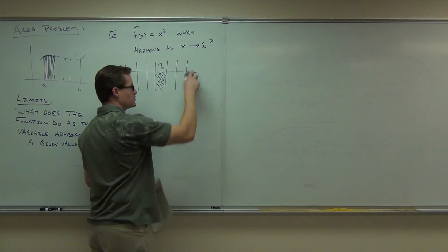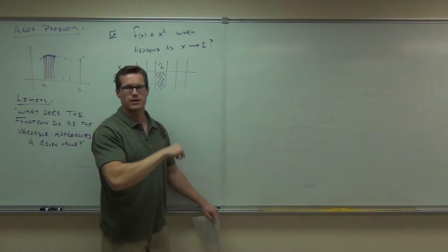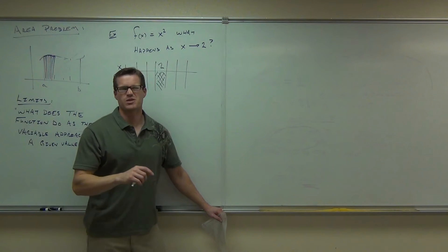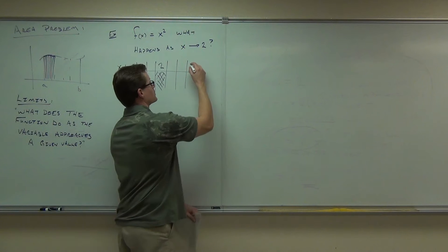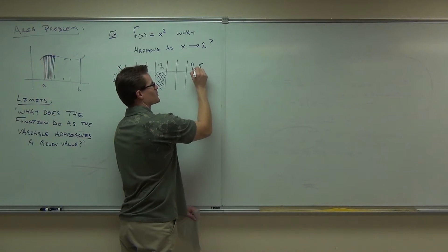Give me some numbers to the right of 2. Some numbers to the right. 3. Give me something smaller than 3. 2.5 is good. I like that. That's what I was about to write. I just ruined it.